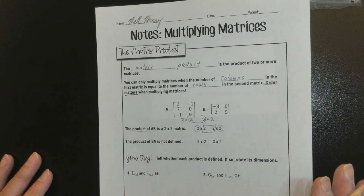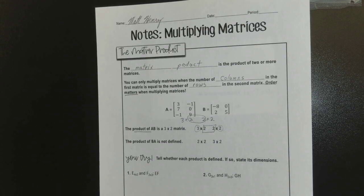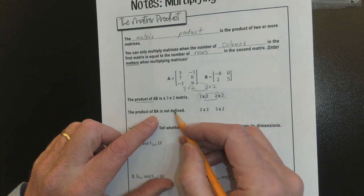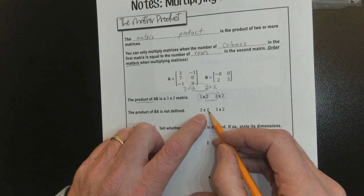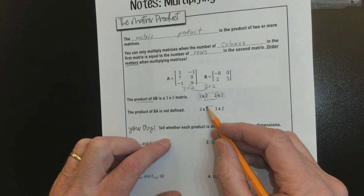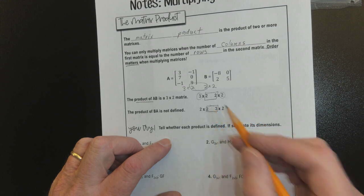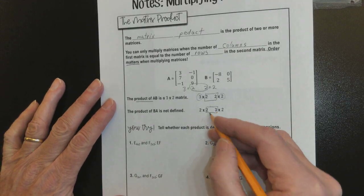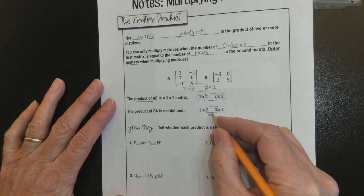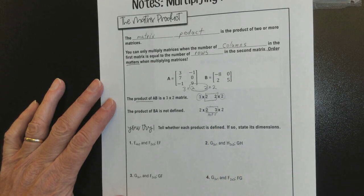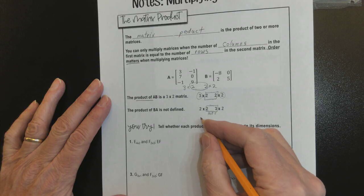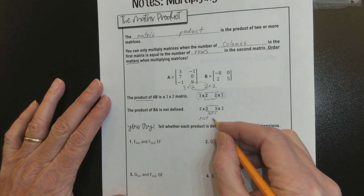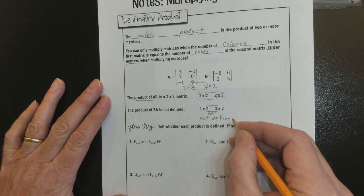Does that make sense so far? So, that is just something we need to define at first. Now, BA, we change that order, we got a 2 by 2 multiplied by a 3 by 2. What happens here? These are not the same. They are not equal. That means this product is not defined. We can't do it.